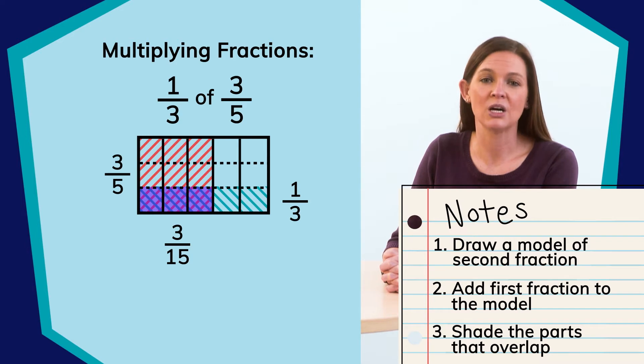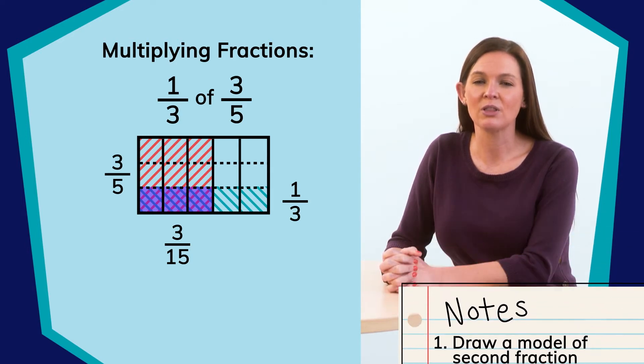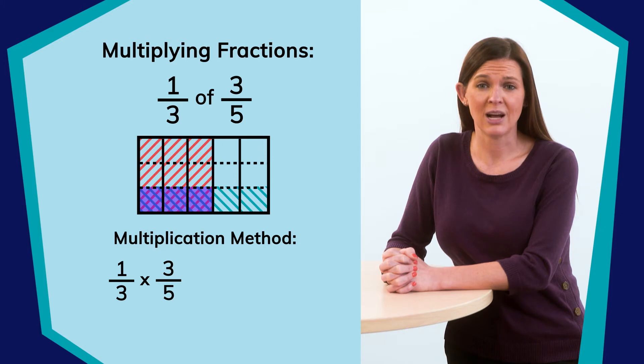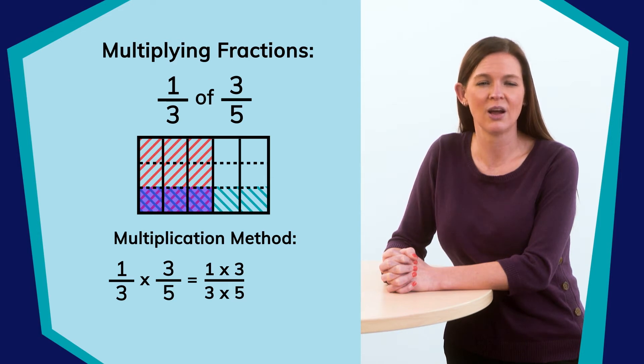Drawing a model helps us to understand what is happening with the math. But let's write the algorithm on our chart too. One-third of three-fifths, or one-third times three-fifths. We can write it as two separate fractions, but then we can change it to put the two numerators together and the two denominators together, which will give us a product of three-fifteenths.